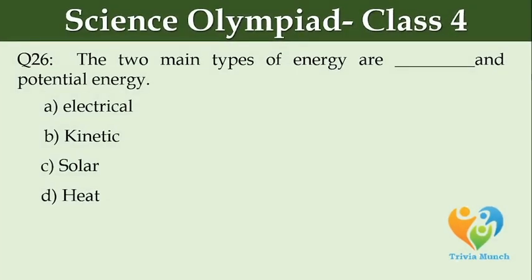The two main types of energy are dash and Potential energy. Option A: Electrical, Option B: Kinetic, Option C: Solar, Option D: Heat.